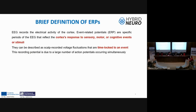Event-related potentials are those parts in the EEG recording that reflect the nervous system's response to sensory, motor, or cognitive events or stimuli. In other words, it can be described as a recorded voltage that is time-locked with an event. This recorded voltage is a result of a high number of action potentials that occur simultaneously.